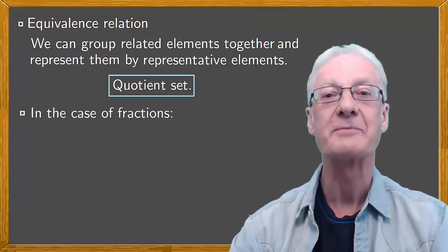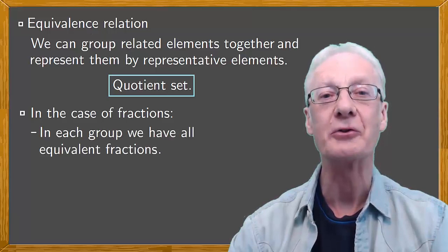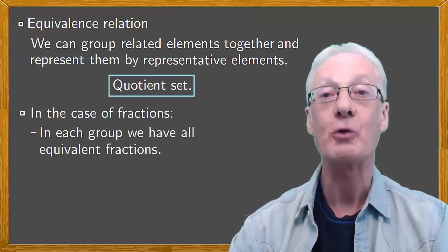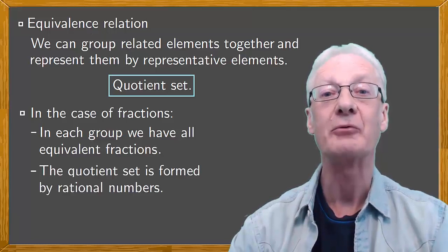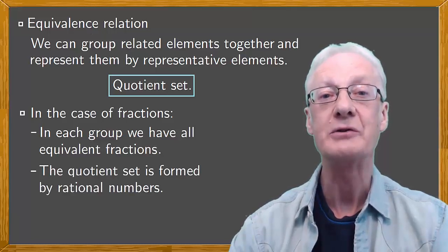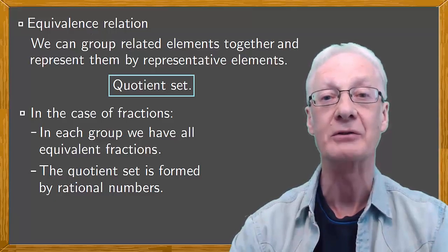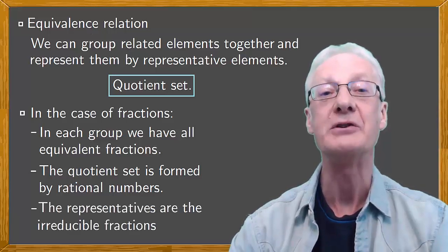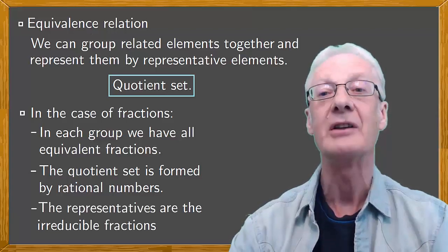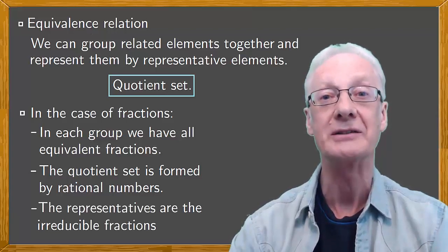In the case of fractions, we group them so that in each group we have all the equivalent fractions. This is the quotient set, the elements of which are the rational numbers. Then we choose a representative of each rational number, which is the irreducible fraction. In the case of the result being negative, the minus appears in the numerator.